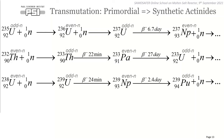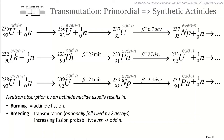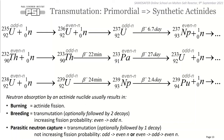Having this on screen, let me define some trivial terms. Burning is nothing else than actinide fission. Breeding is transmutation — optionally followed by two decays — which increases fission probability by changing even-n to odd-n. Parasitic neutron capture is transmutation optionally followed by one decay where you are not increasing fission probability — odd-n to even-n, or even-n transmuted by capture followed by decay again ending at even-n. For example, neutron capture on uranium-236 creates uranium-237, which promptly decays to neptunium.